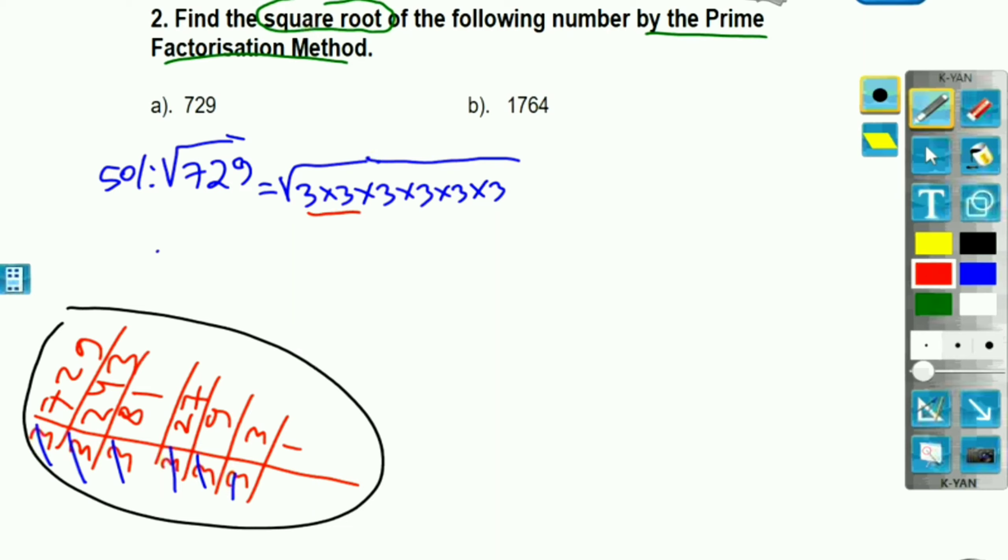This gives us 3, 3, and 3. So we get 3 times 3 times 3 times 3 times 3 times 3. That is 3 times 3 times 3. So, similarly, 3 times 3 times 3 from the root. Our answer is 27.